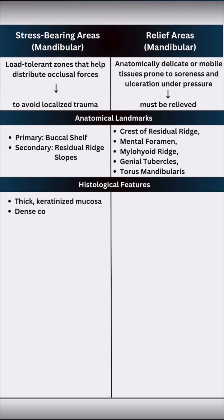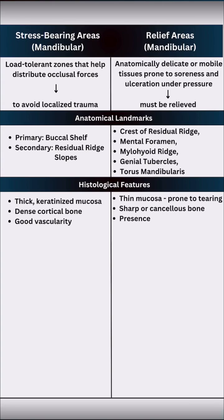Histologically, stress-bearing zones have thick keratinized mucosa, dense cortical bone, and good blood supply. Relief areas often have thin mucosa, sharp or cancellous bone, and nearby nerves or muscle insertions.